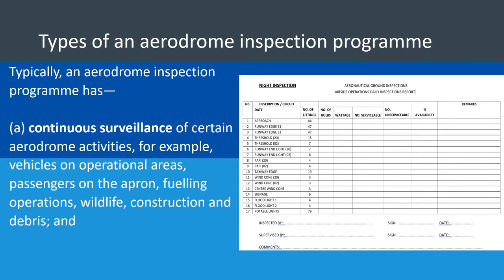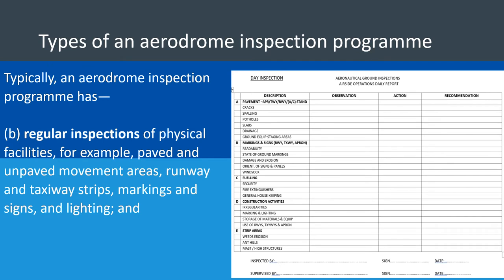That brings us to the types of inspections. Since some situations occur instantaneously and others gradually, there are different types of inspection aimed at identifying different types of problems. Typically, an aerodrome inspection program may include continuous surveillance — for example, aerodrome activities like vehicles on operational areas, passengers on the apron, fueling operations, wildlife, construction, and debris could be surveyed continuously, because issues from those areas can happen at any time.